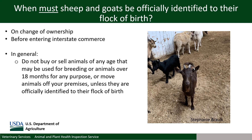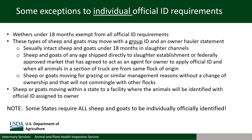In general, do not buy or sell animals of any age that may be used for breeding, or animals over 18 months of age for any purpose, or move animals off your premises unless they are officially identified to their flock of birth. In order to reduce burden on sheep and goat producers, there are federal exceptions where sheep and goats are not required to have official individual ID when entering interstate commerce, if this can be done while still maintaining the integrity and effectiveness of the NSCP.